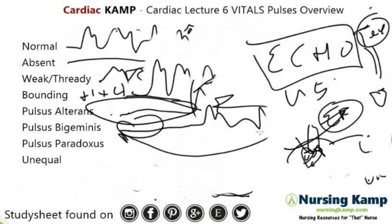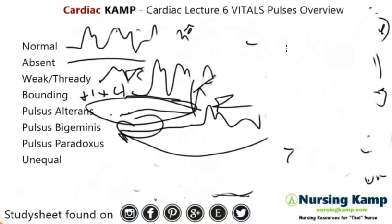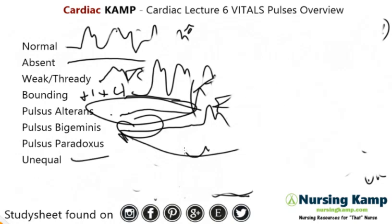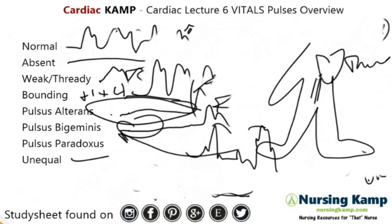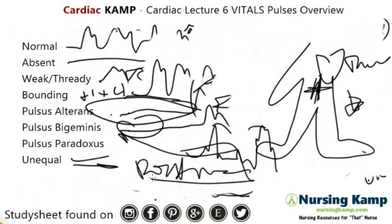The next finding is unequal pulses. Unequal pulses are generally on different sides and are very acute. If you have a good pulse on one side and a smaller or absent pulse on the other, we're looking at acute findings like cardiac tamponade or a dissecting aortic aneurysm where the patient is bleeding out. Whenever you find unequal pulses, that's always a doctor's call — it's not a normal finding.